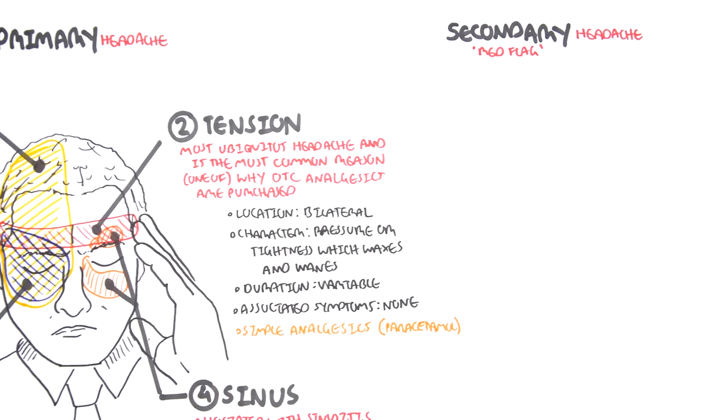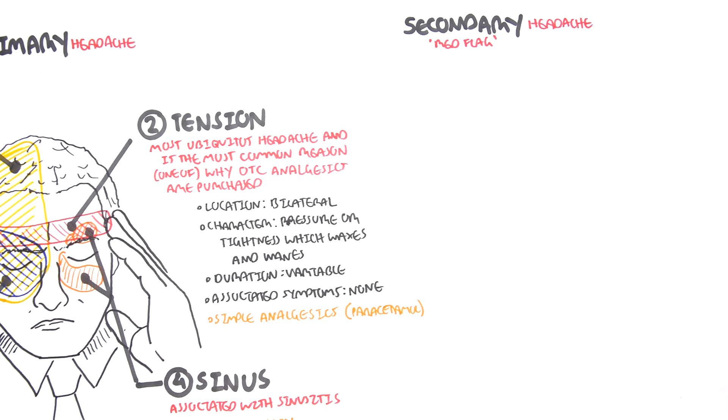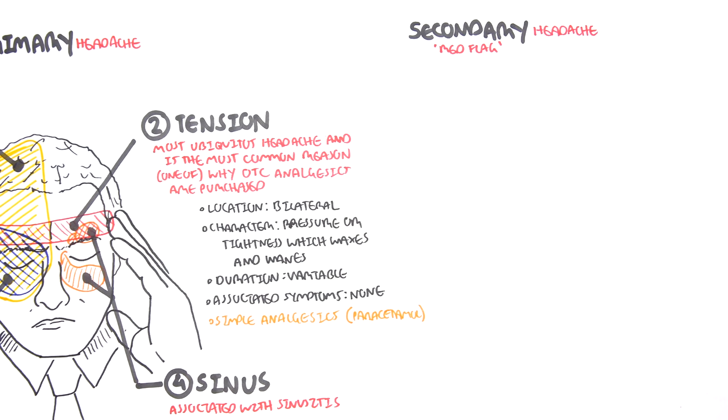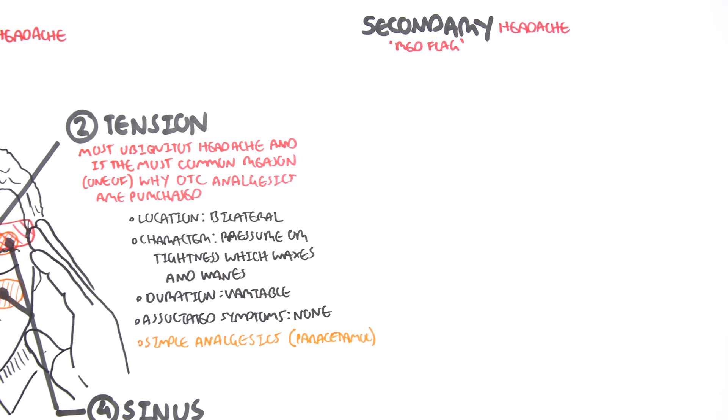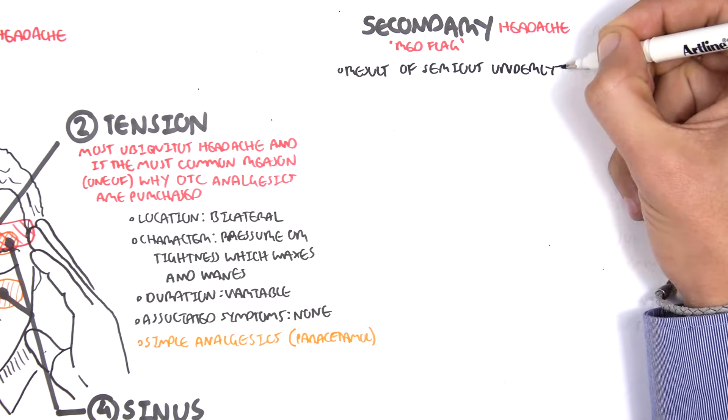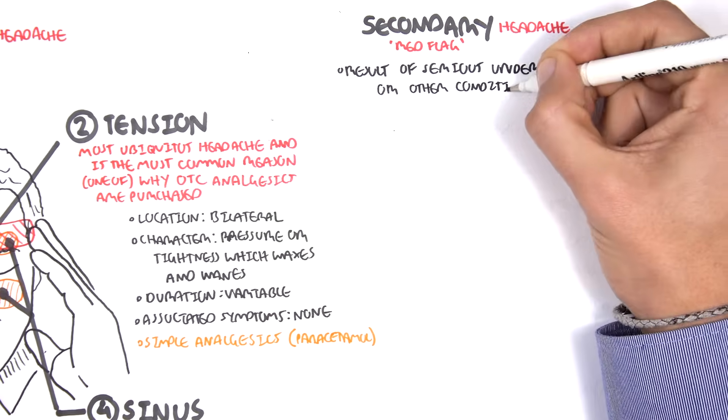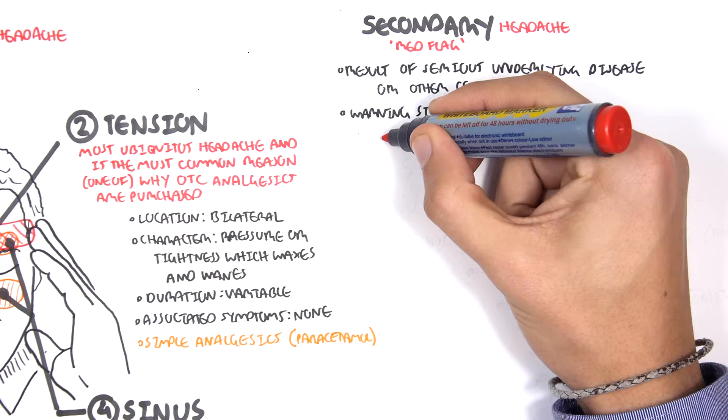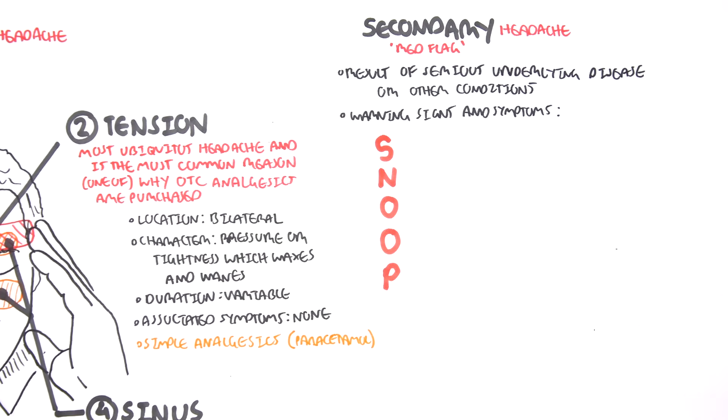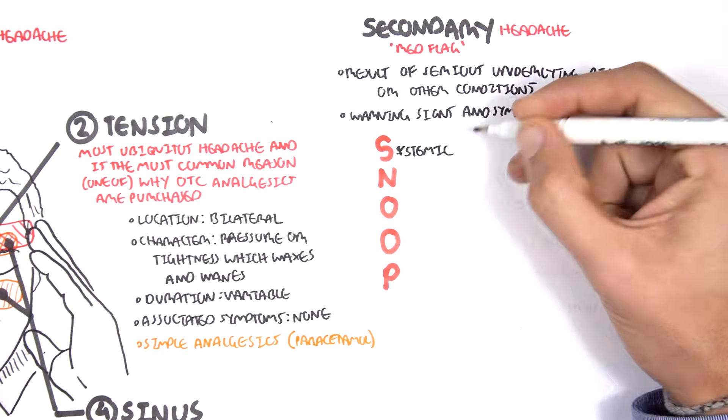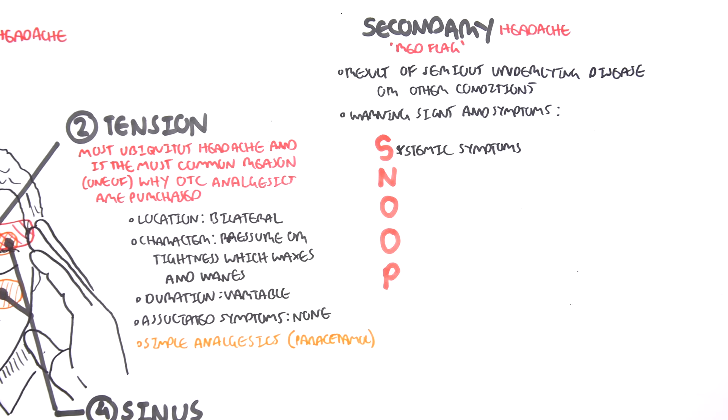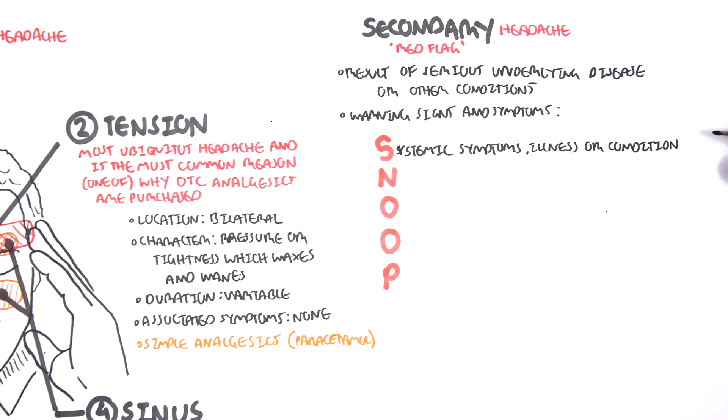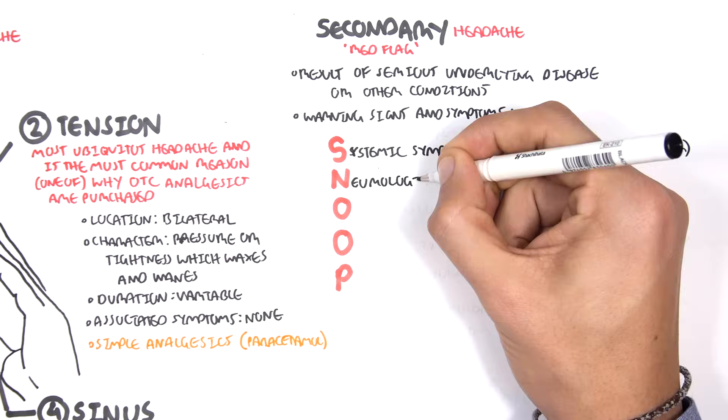Secondary headaches, as I mentioned earlier, are serious and dangerous. They are a result of serious underlying diseases or other conditions. We have some warning signs and symptoms for secondary headaches, and we can remember this by the acronym SNOOP. S stands for systemic symptoms, illness, or condition such as cancer. N is for neurological symptoms or abnormal signs.